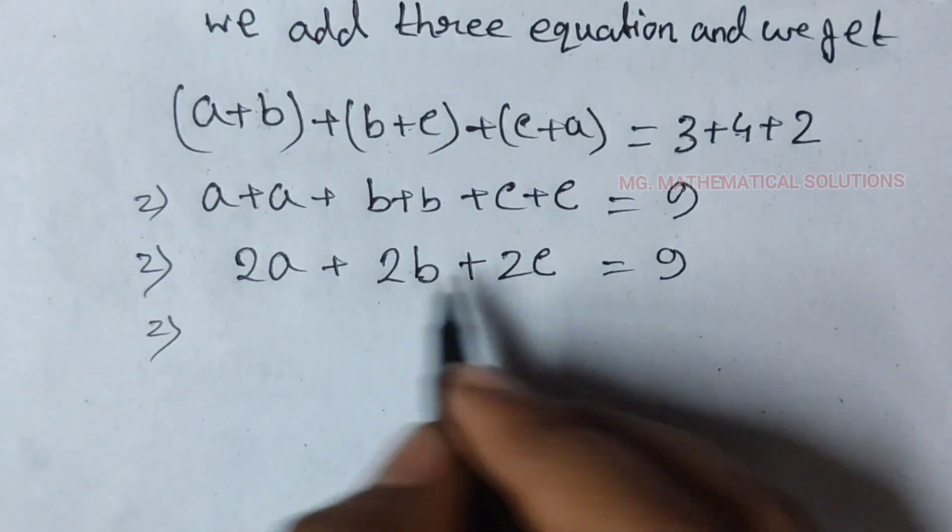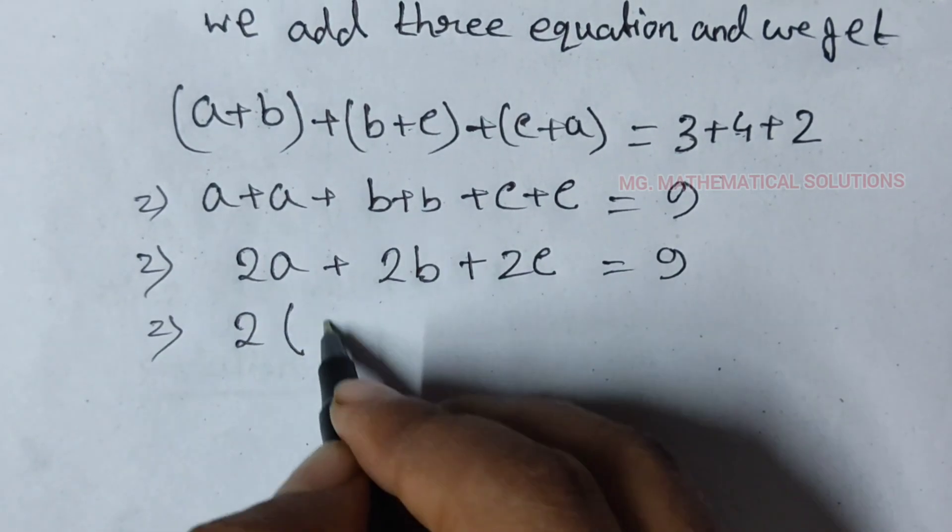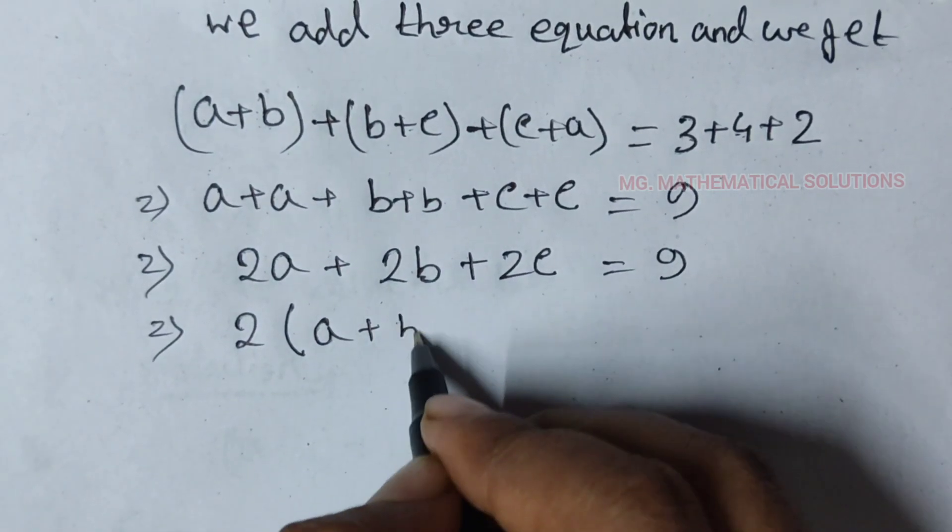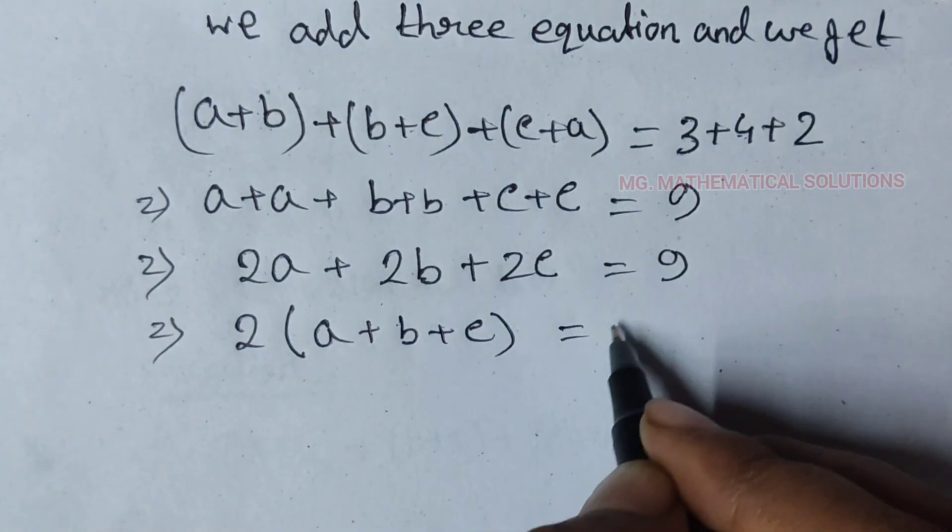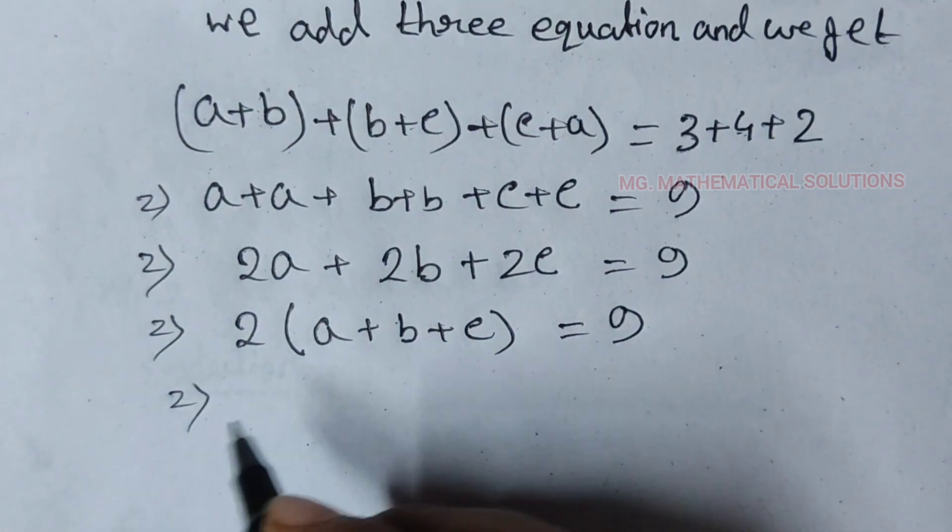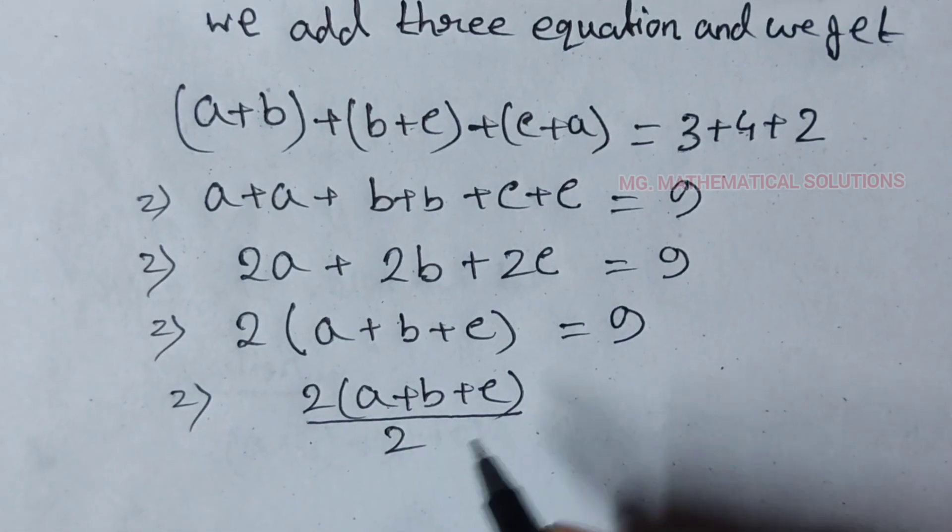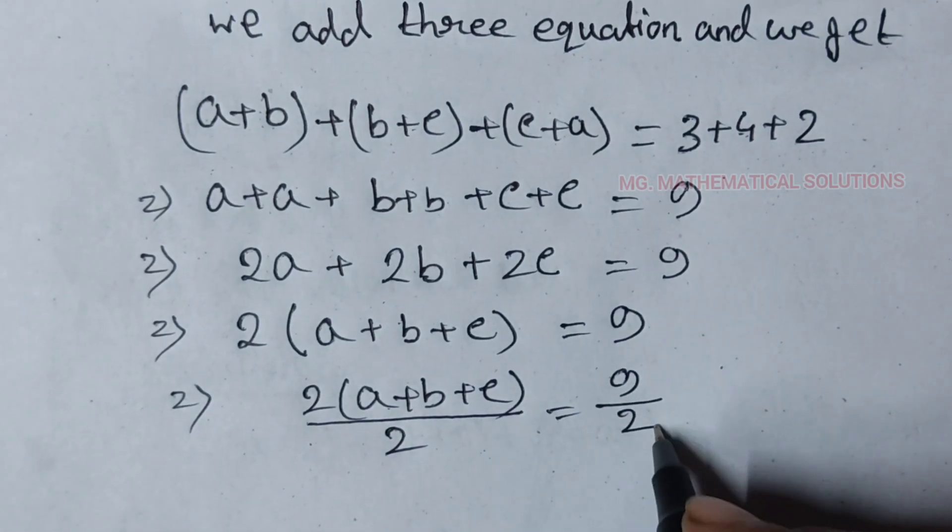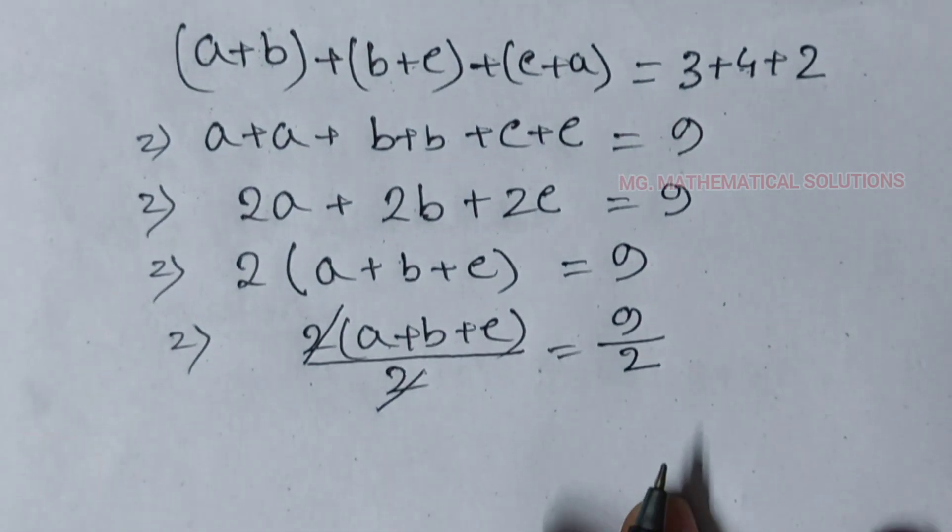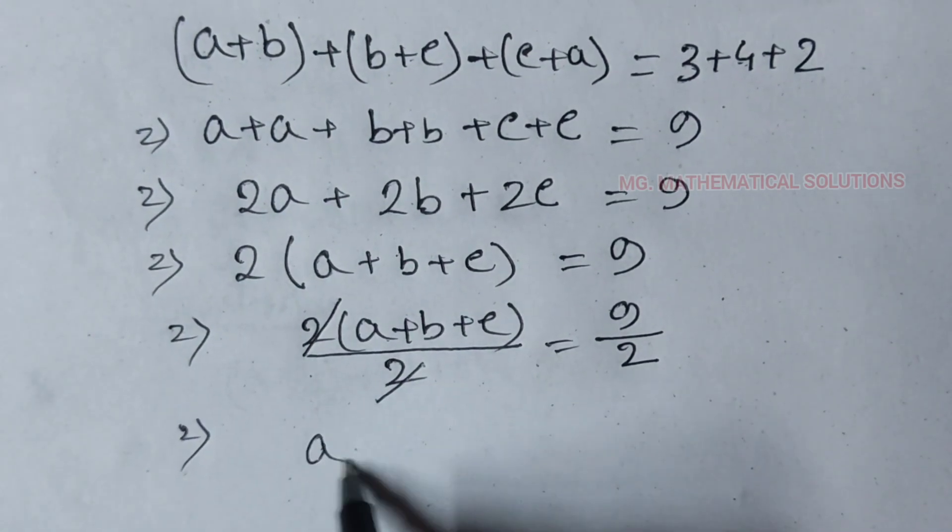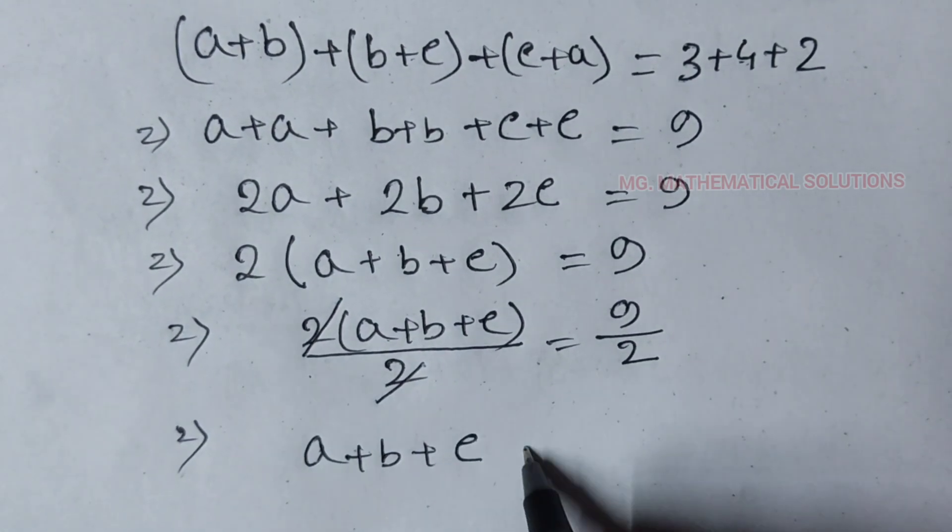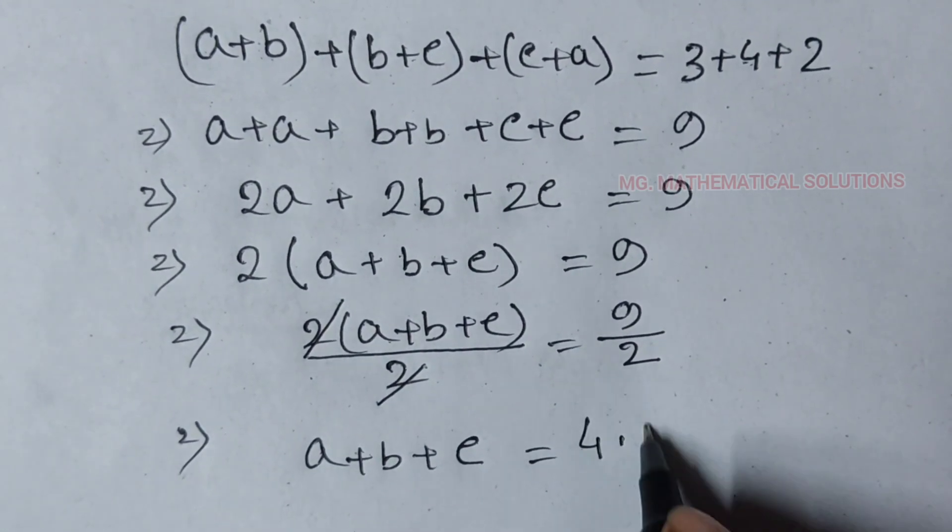Here we see that 2 is common. Two times a plus b plus c equal to 9. We divide both sides by 2.